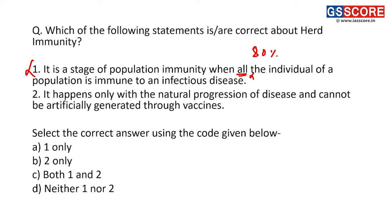Second statement: herd immunity happens only through natural progression of disease and cannot be artificially generated through vaccines — this is also incorrect. Herd immunity can be acquired through natural progression of disease as well as through vaccines. Both statements are incorrect, so the answer is D — neither 1 nor 2.